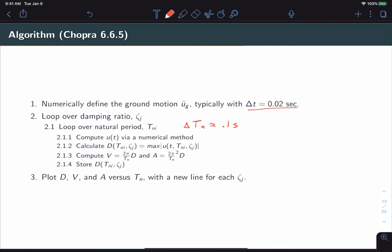And simply store that value of D for the corresponding period and damping. Once you've looped over all damping ratio and natural period combinations, you'll simply plot D, V, and A versus Tn. And generate a new curve for each damping value.